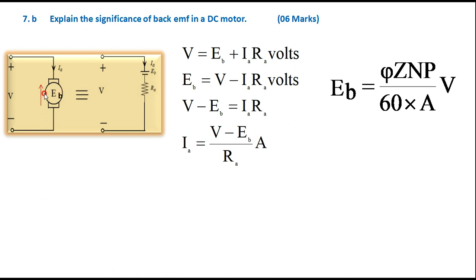Under the second condition — when running at rated speed — back EMF is produced in the DC motor. Under normal rated speed, the back EMF is almost equal to the applied voltage, very close to V. Therefore the difference (V − Eb) is very very small, and thereby the current drawn by the armature is much less. This is how we explain the significance of back EMF in the DC motor.